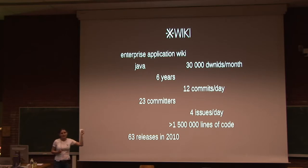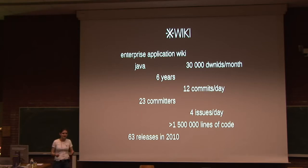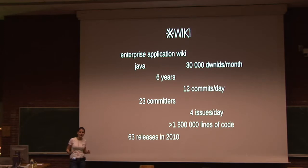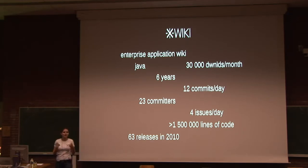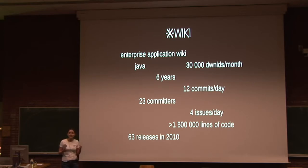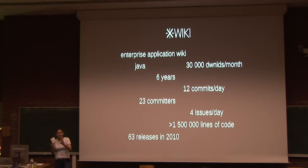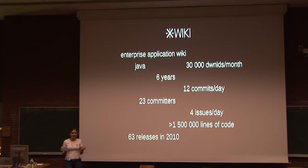Now what's an enterprise application wiki — what's an application wiki most importantly? Well, first it means that it's a wiki, it has the documents, it has enterprise level collaboration features around these documents, and besides that it has extensibility features to allow users to create situational applications, meaning that normal users would go in the web interface of the wiki, define data types, fill in data for those data types, store it in the wiki, and then write a little bit of scripting to use that data to create little applications.